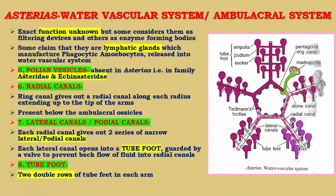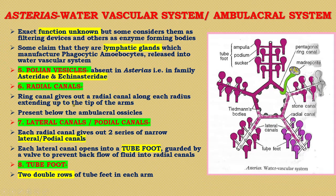Polian vesicles are absent in Asterias — these are structures that store water, and they are absent in the families Asteriidae and Pynasteriidae. The next part of this system is the radial canals. The ring canal gives out a radial canal along each radius extending up to the tip of the arms. These are present below the ambulacral ossicles.